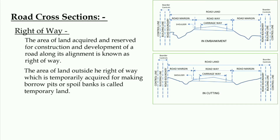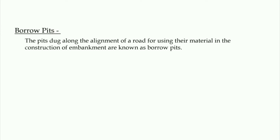The area of land outside the right of way which is temporarily acquired for making borrow pits or soil banks is known as temporary land. Next is borrow pits: the pits dug along the alignment of a road for using their material in construction of embankment are known as borrow pits.